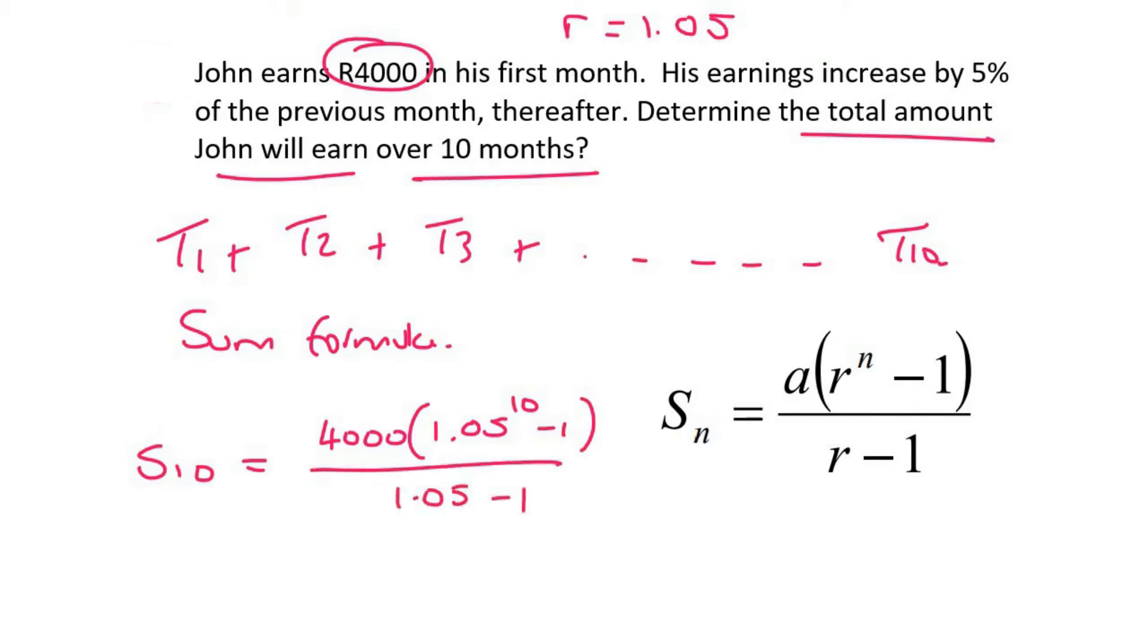And then minus 1. And so in 10 months, John is going to earn a total of 50,311 rand and 57 cents.